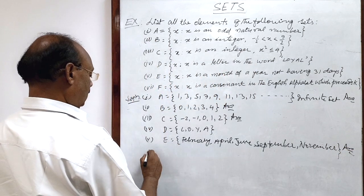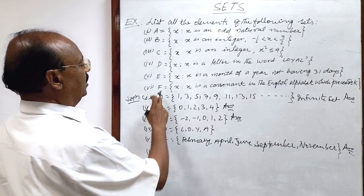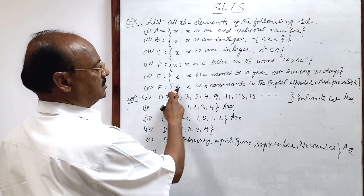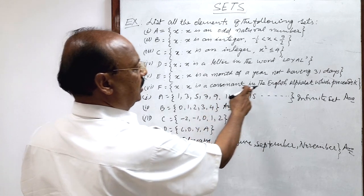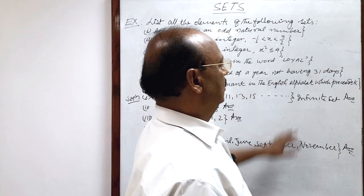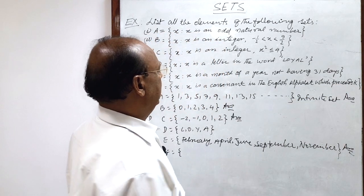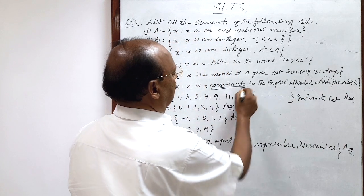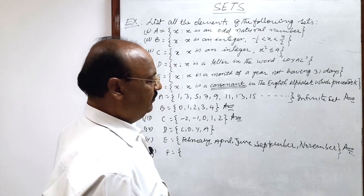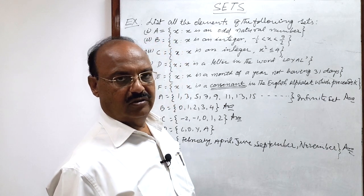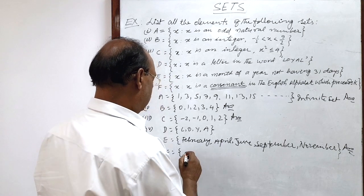And one more question is here, sixth part. Set f consisting element x such that x is a consonant in the English alphabet which precedes k. Here we have to write consonants only, not all alphabets. Alphabets start with a, which is not a consonant, which is vowel. So we will start here.